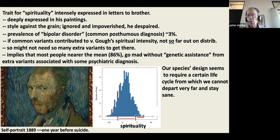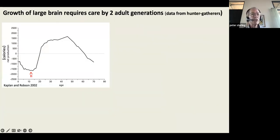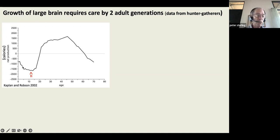This leads me to the idea that our species' design — the way we evolved — seems to require a certain life cycle from which we can't depart very far and stay sane. This diagram, prepared by anthropologists and ethnographers, sums data from all continents of hunter-gatherer groups, showing net caloric production by age. At birth, an infant is consuming calories through all the early years. We don't begin to produce net calories until about age 20.